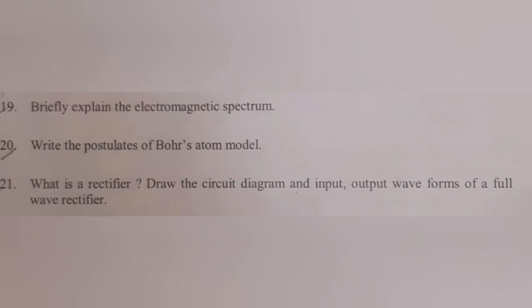Question 20: Write the postulates of Bohr's atomic model. Answer: Electron revolving around a center called nucleus. mvr equals nh by 2π.